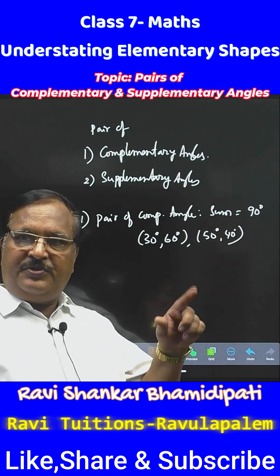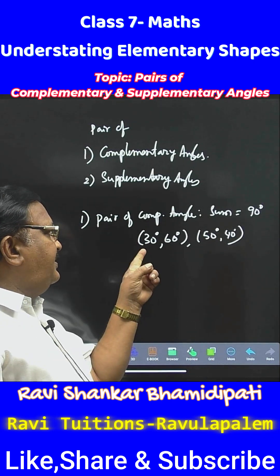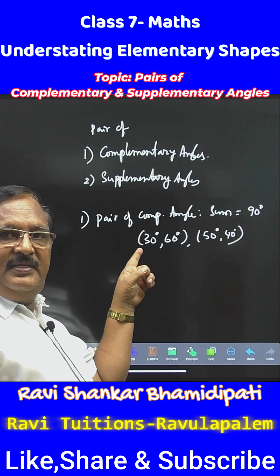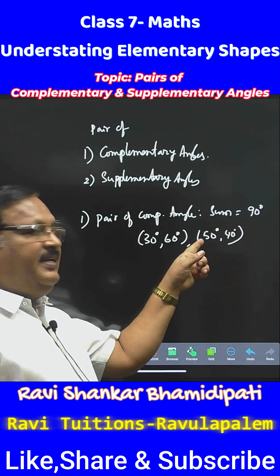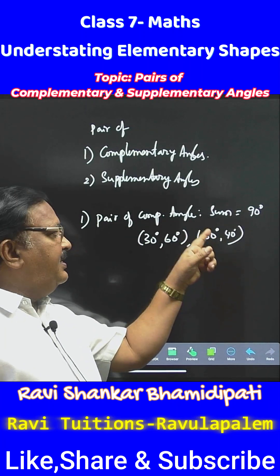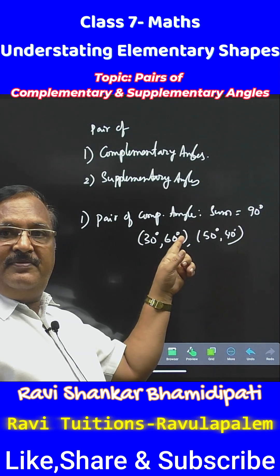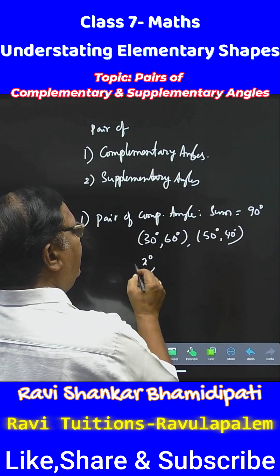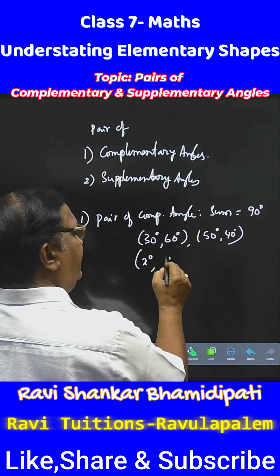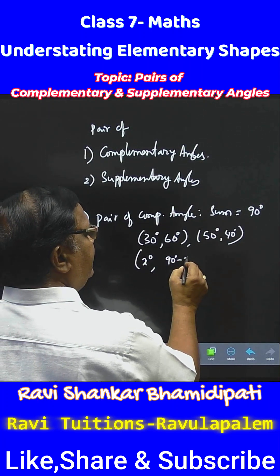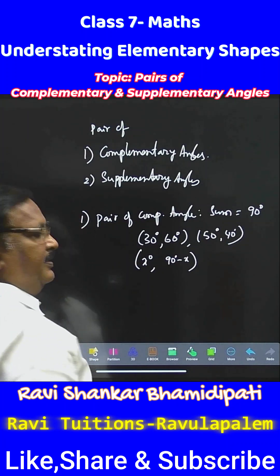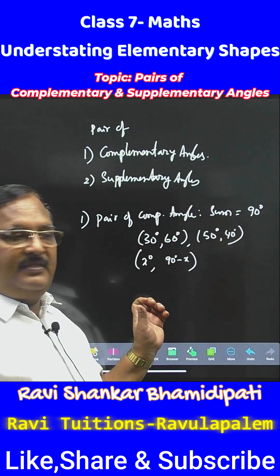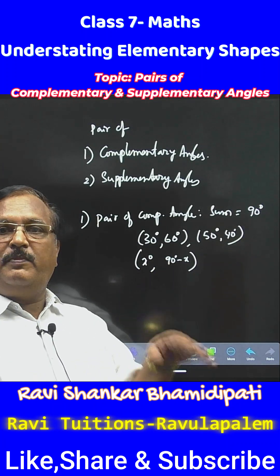One more thing you have to understand: 30 degrees is the complement of 60 degrees, and 60 degrees is the complement of 30 degrees. And 50 degrees is the complement of 40 degrees, and 40 degrees is the complement of 50 degrees. If x is the angle, then the complement of this angle is 90 degrees minus x, and that gives you the complementary angle.